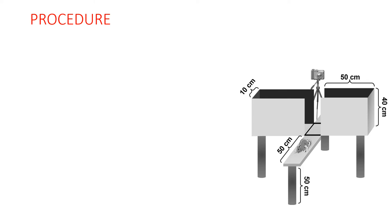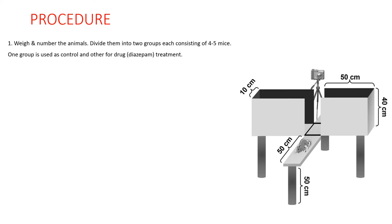Procedure: weigh and number the animals, then divide them into two groups each consisting of 4-5 mice. One group is used as a control and the other as the diazepam-treated group.